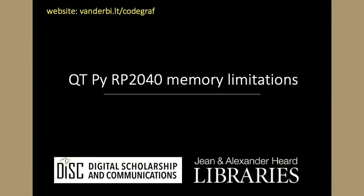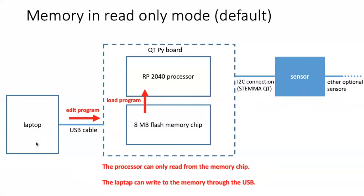The QtPi RP2040 is a very simple computer using the very simple CircuitPython operating system, and it's not set up to have multiple devices writing to the memory on its board. In normal operation, we edit the program through a laptop or other computer, and that information gets passed into the flash memory chip through the USB cable. The processor is able to load the code stored in the memory chip, but it's not actually able to write anything because it's in the default read-only mode.